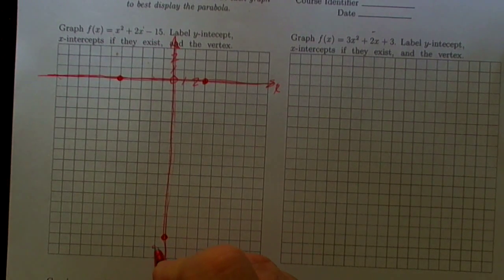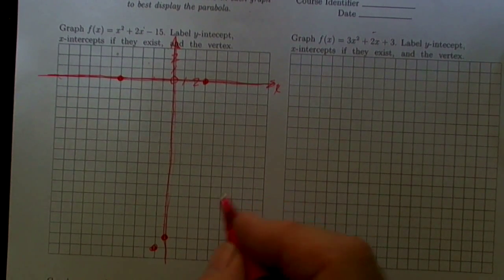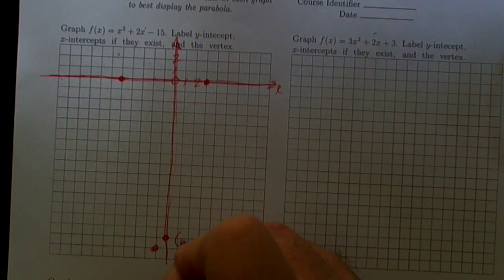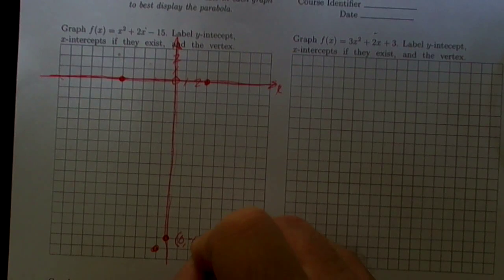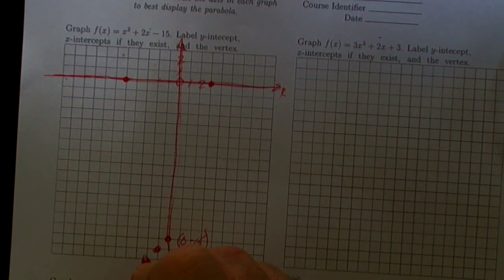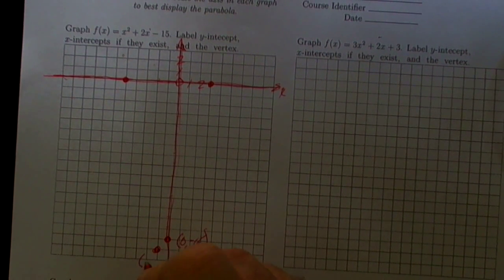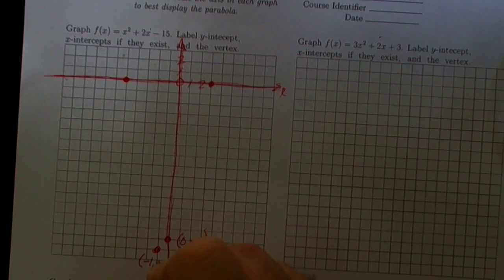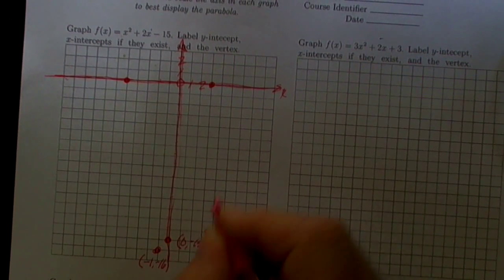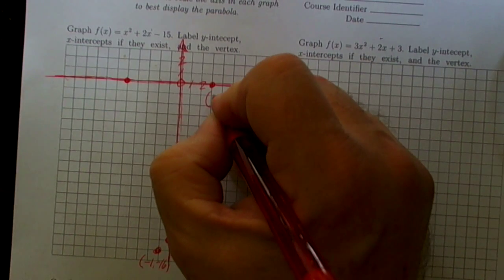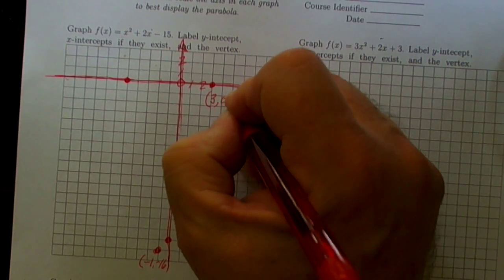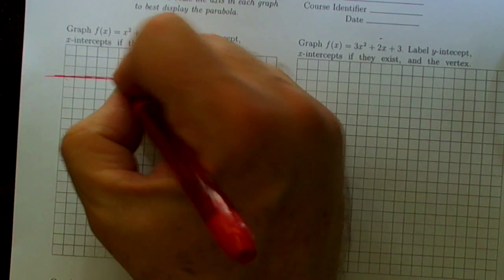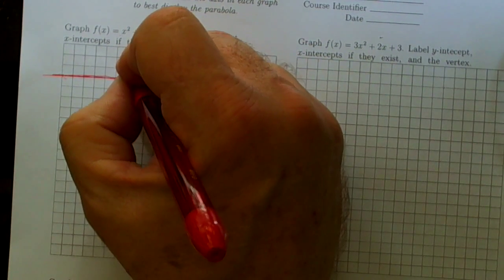And (-1, -16) was the vertex. So let's label all of these. The y-intercept was at (0, -15). The vertex was at (-1, -16). This x-intercept was at (3, 0).